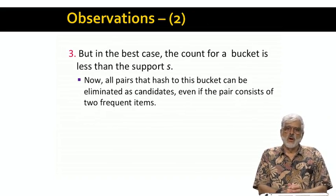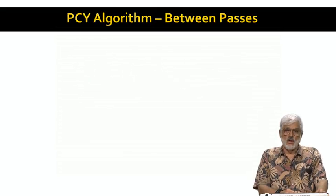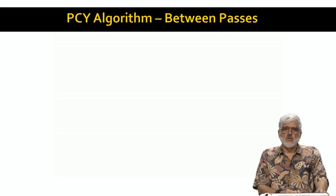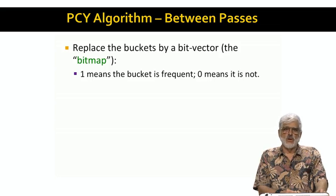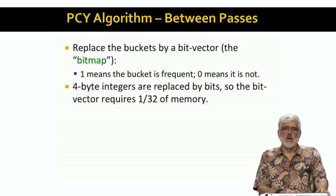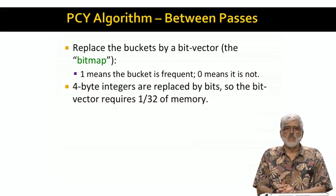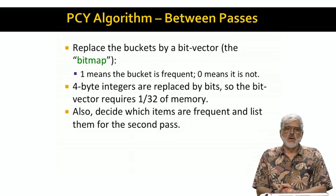We get a lot of leverage when a bucket is not frequent: we do not have to count any of the pairs that hash to that bucket, even if the pair consists of two frequent items. After pass one, we set up pass two by constructing the bitmap from the buckets. This bitmap has one bit for each bucket in order, so we can easily look up the bit corresponding to a given hash value. One means the bucket was frequent, zero means it was not. If the buckets are four-byte integers, we get a 32-to-1 compression when we replace the buckets with the bitmap. As in A Priori, we also create a list of the frequent items to use on the second pass.